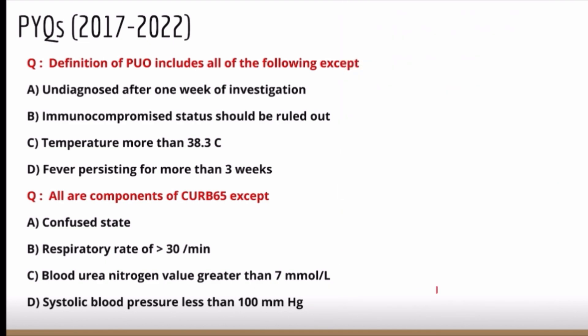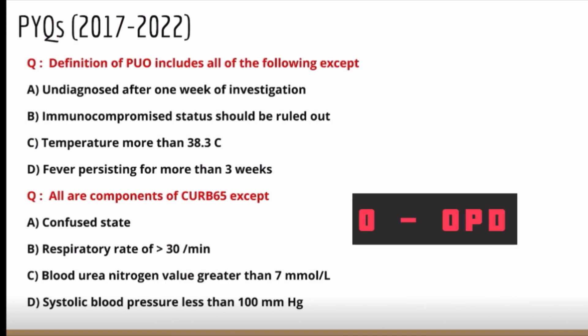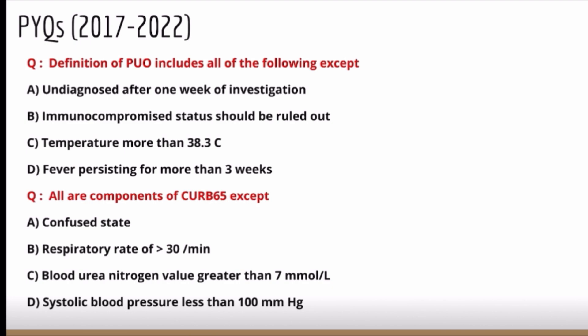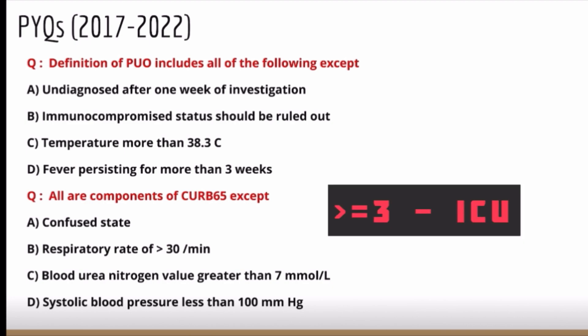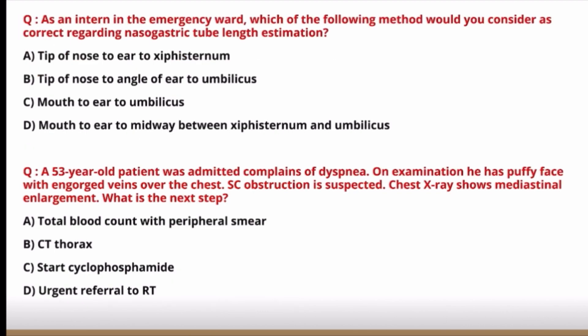CURB-65 is a very frequently repeated question. Regarding scoring: if the score is 0, treat on OPD basis; score 1 to 2, treat in IPD; score more than 2, treat in ICU.